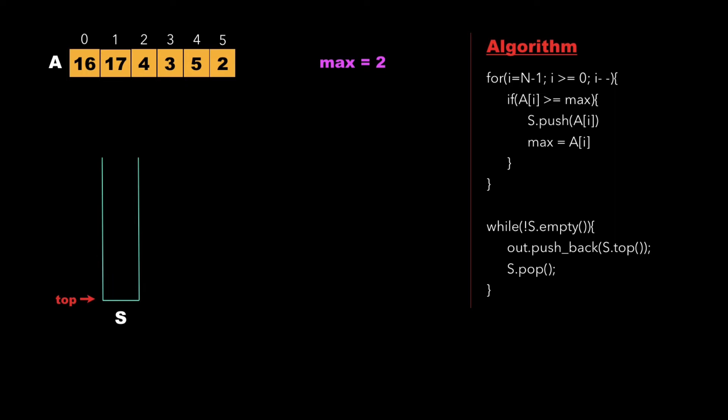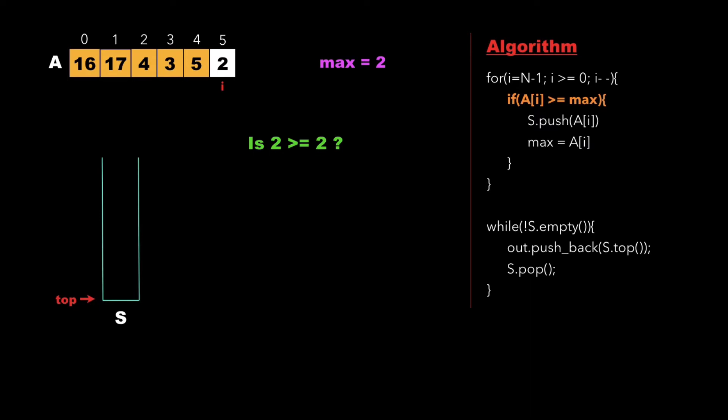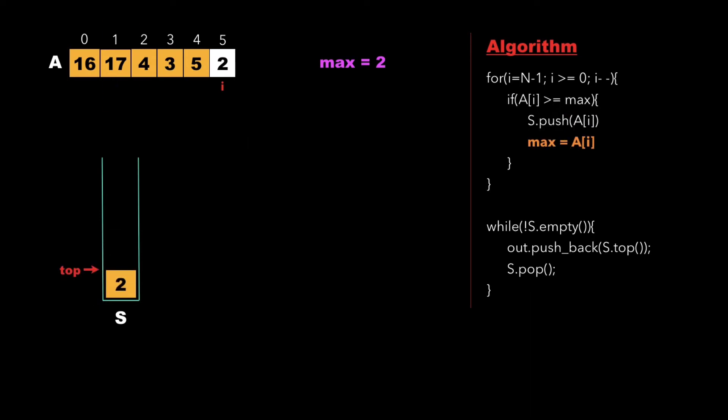We traverse the array from back to front, that is from i equal to n minus 1 to i greater than or equal to 0. At each traversal we check whether a[i] is greater than or equal to max. We check whether 2 is greater than or equal to 2, and since this condition is true, we push a[i] into the stack. So the stack contains 2, and we update max as a[i], which is 2 itself, then decrement i.